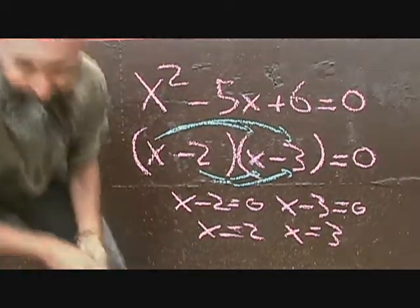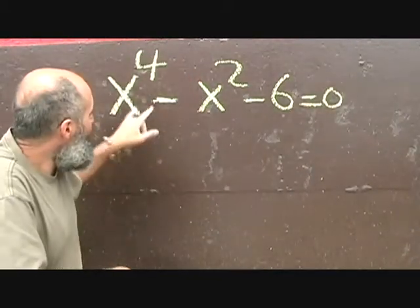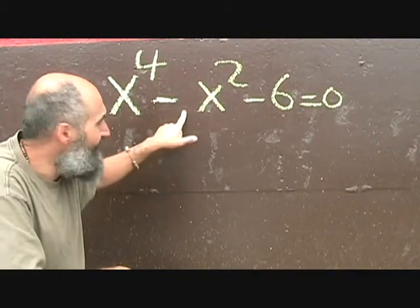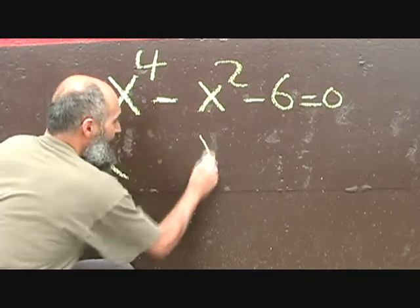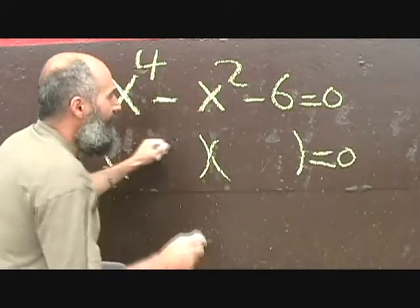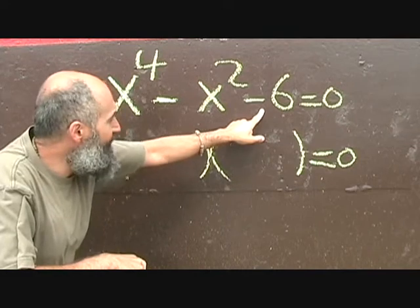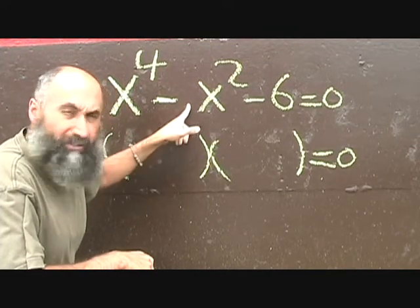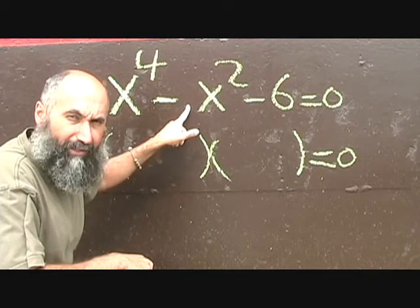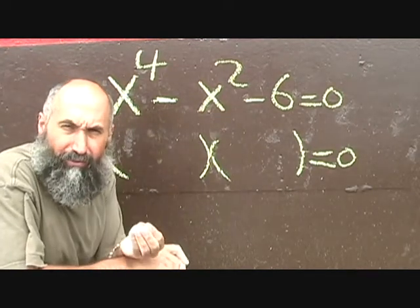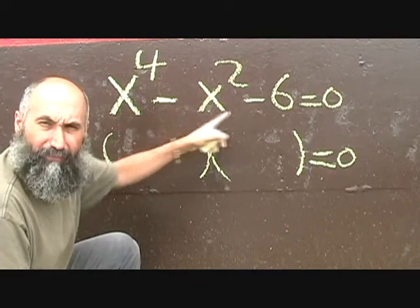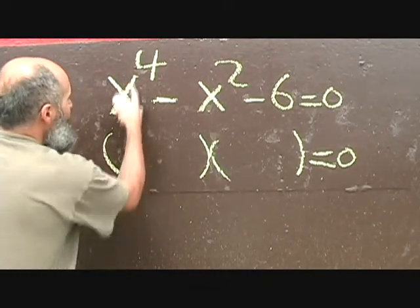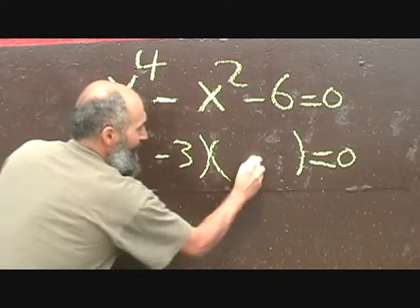For the next problem, I changed the sign for the 6 and dropped the 5. You do the same thing — set up brackets and ask: what two numbers multiply to give negative 6 and add to give negative 1? With 2 and 3, it's going to be negative 3 and positive 2, since negative 3 times 2 is negative 6 and negative 3 plus 2 is negative 1.